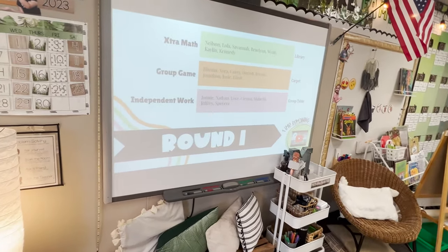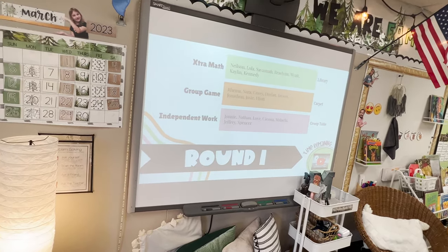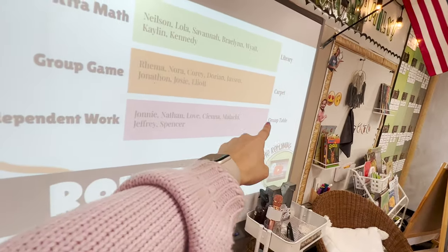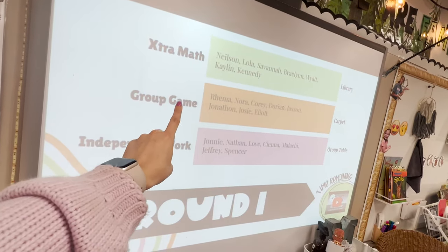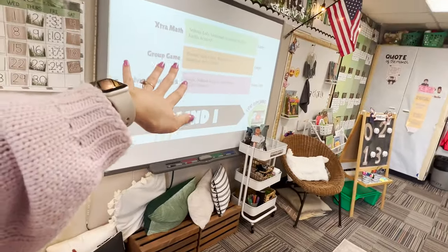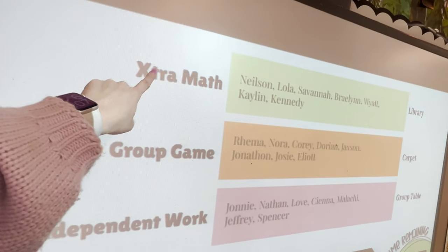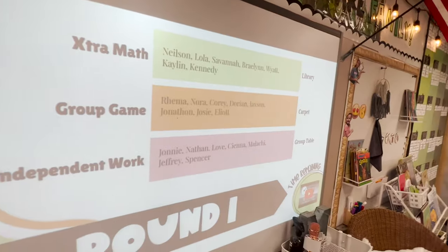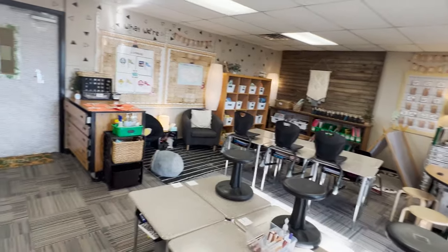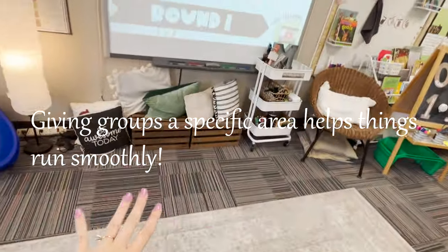Their groups are pretty predictable unless we've started a new unit — then I tell them there will be some changes, but typically they all know where they start. The independent group comes to my table first. Then there's a group game that changes slightly, but typically that group stays on the carpet and plays a game either on the board or an actual board game that's math related. And then the last group is on a computer program. I love a program called Extra Math. I have those students sit over in the library area so that we're all spaced out — my group at the table, the computer group, and the game group on the carpet.